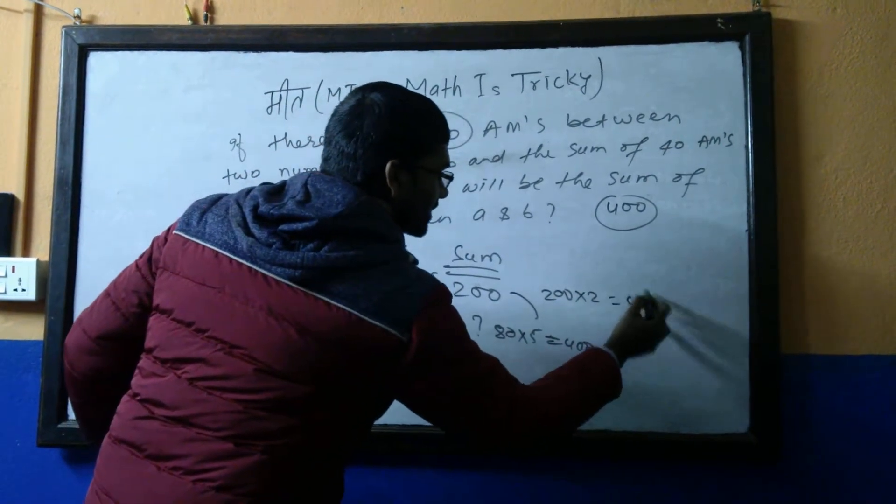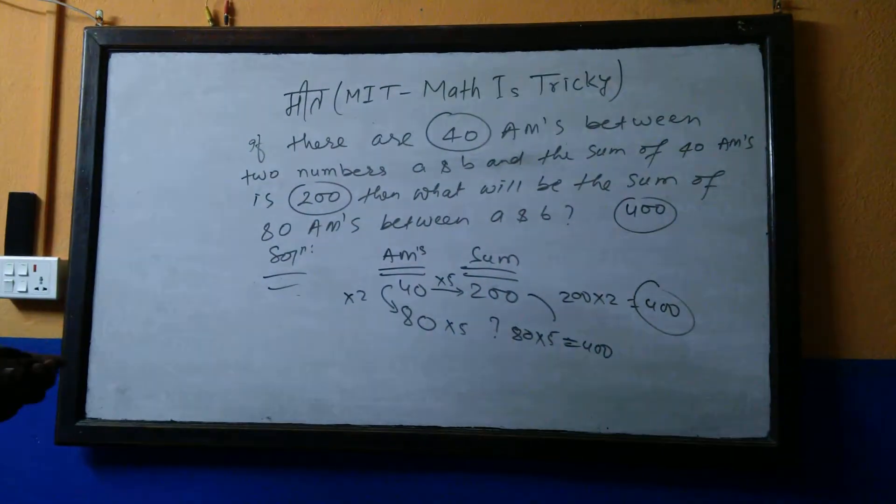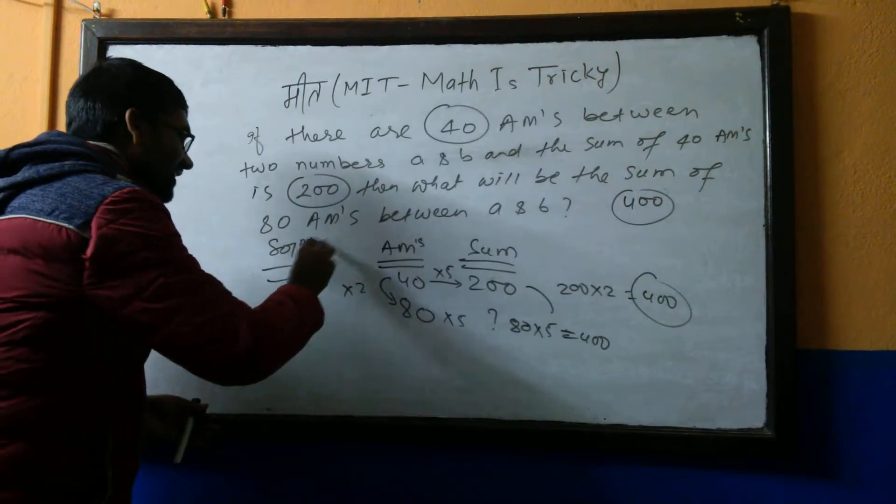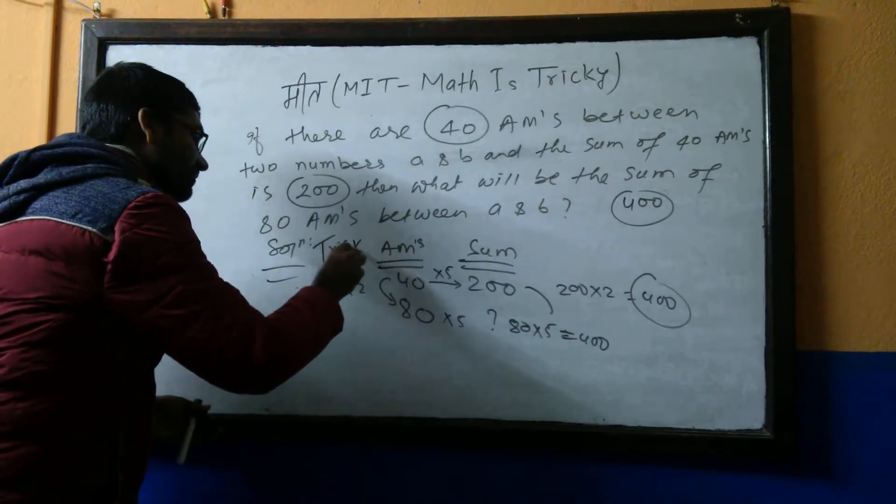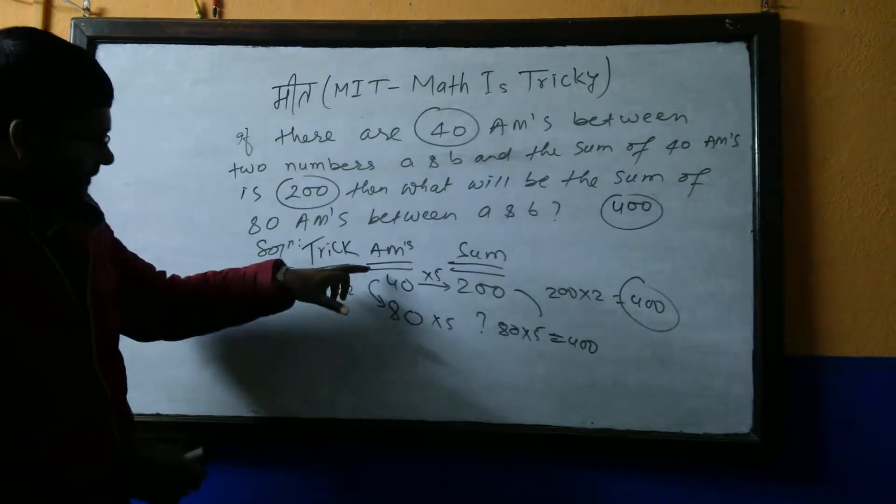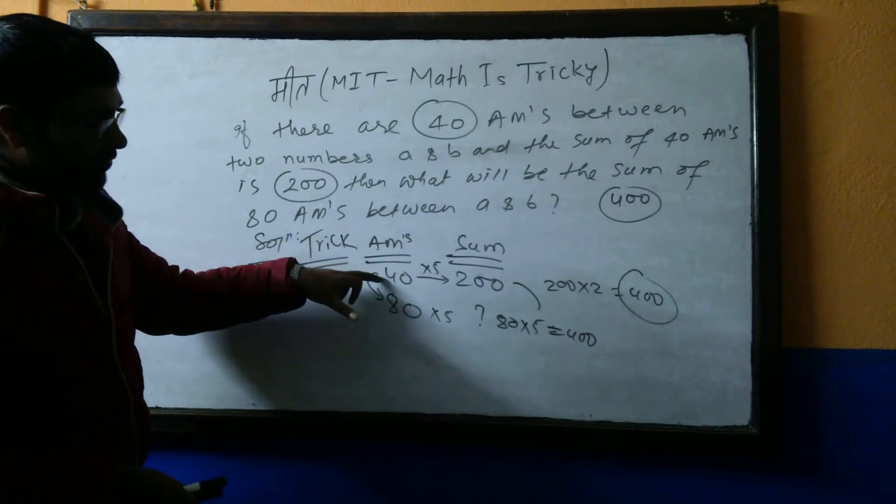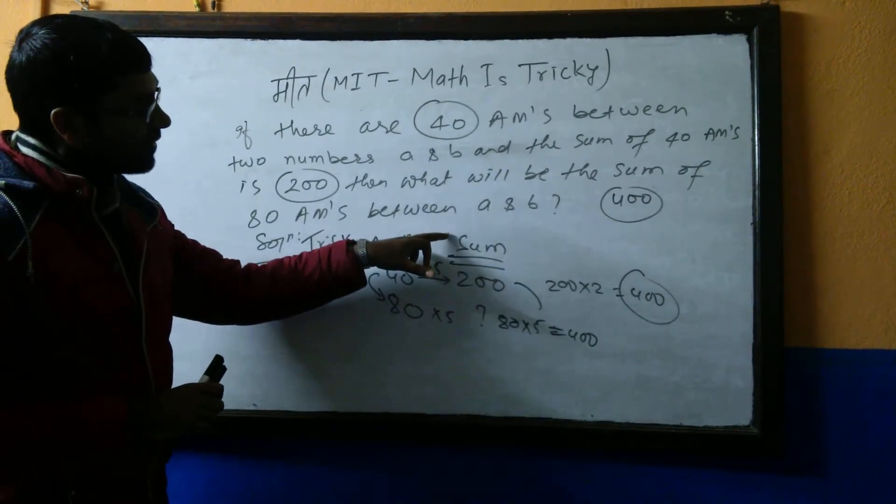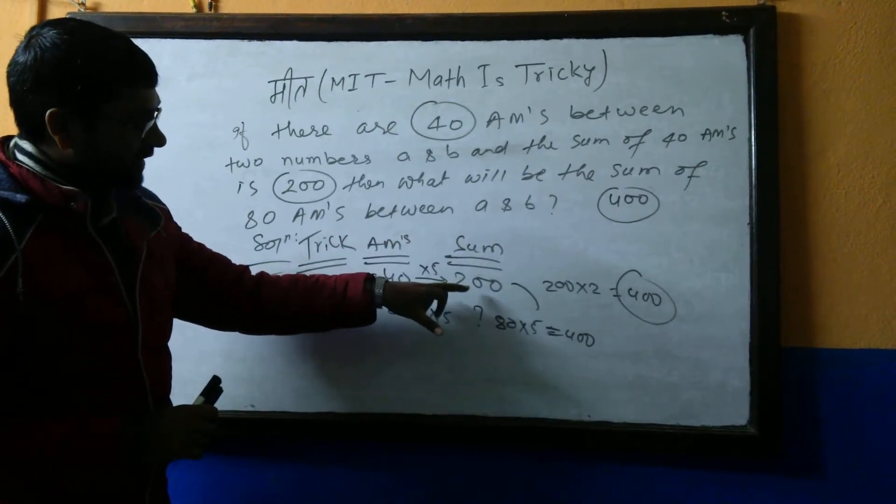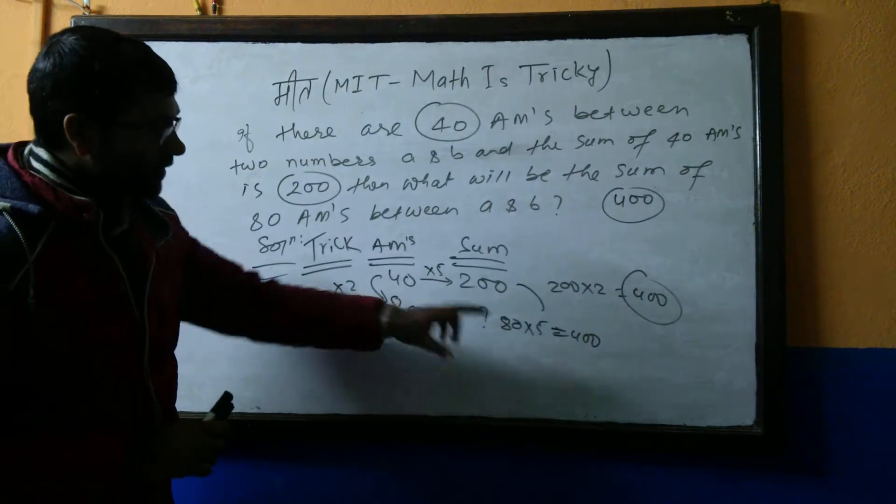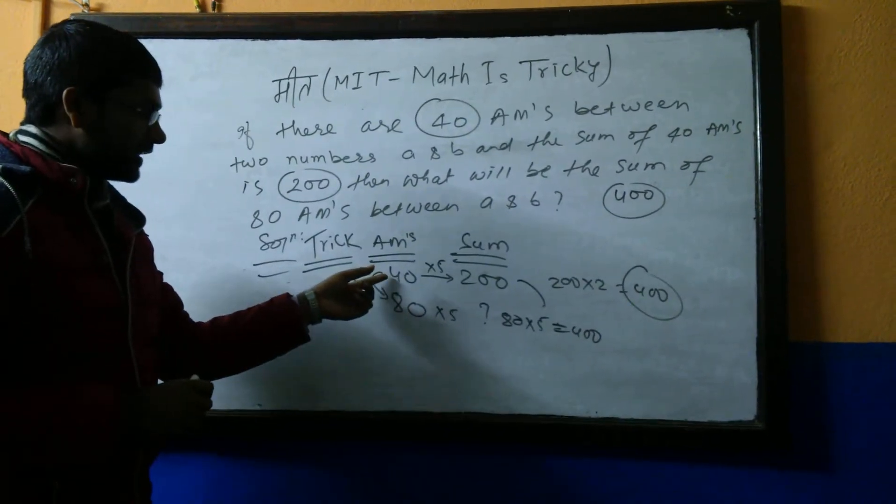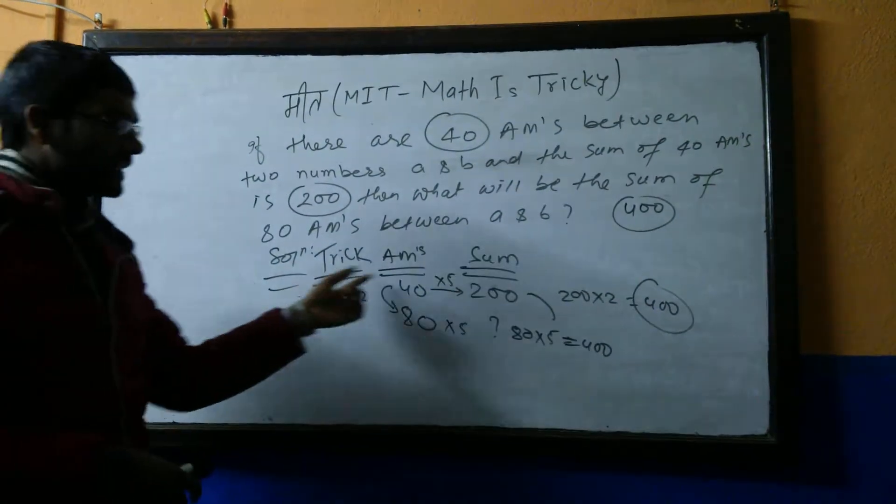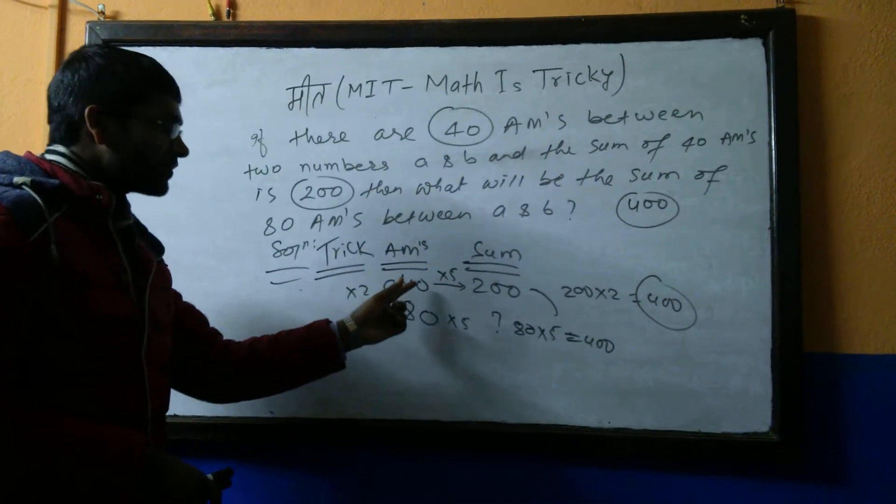Also you can check here: 40 times 2 is 80, so answer will be again 200 times 2, which is 400. This is the trick. Check here, the trick is: the number here is first 40, at second case it is 80. Now sum is at first 200.